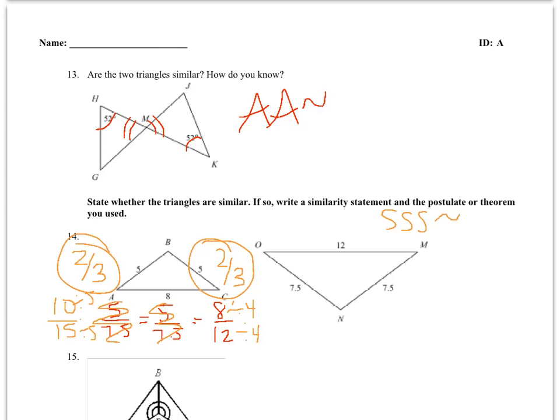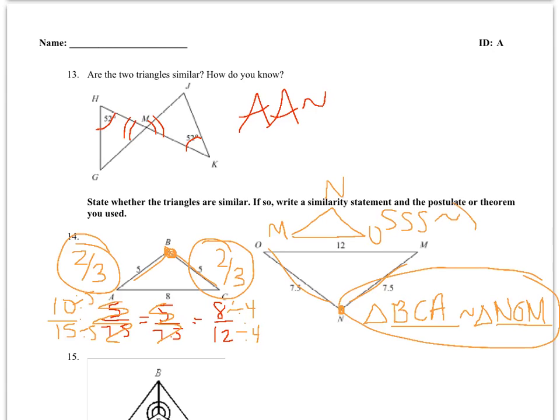My similarity statement that I write will be triangle blank similar to triangle blank. I know that B and N are going to be like my vertex angles where my two congruent sides branch off of. So B and N are going to be my first two letters. I'm going to turn this triangle here so I can see it more clearly. It's going to be N, M, O. So if I start with B, I'm going to go clockwise, C, A. And I'm going to go N, O, M. So that is my similarity statement and my justification.